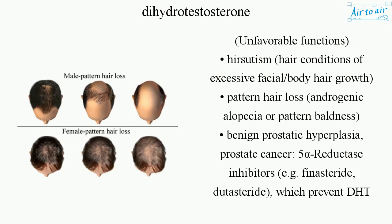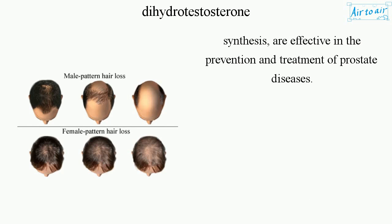5-alpha reductase inhibitors, e.g. finasteride and dutasteride, which prevent DHT synthesis, are effective in the prevention and treatment of prostate diseases.